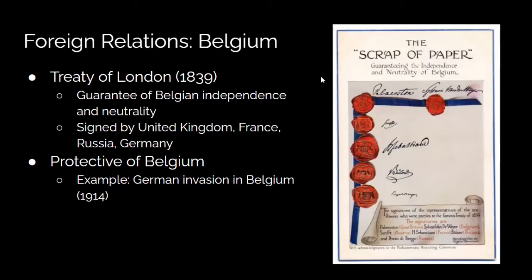Moving on to foreign relations — first, Belgium. Great Britain and Belgium officially formed an alliance over the Treaty of London in 1839, which guaranteed Belgian independence and neutrality, signed by Great Britain, France, Russia, and Germany. This was later broken by Germany. It caused Great Britain to become very protective of Belgium. When Germany invaded Belgium in 1914 in order to get to France, another ally of Great Britain, this caused Great Britain to go to war against Germany.